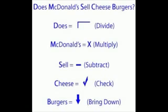Does represents division, McDonald's represents multiplication, sell represents subtraction, cheese represents check, burgers represents bring down the next number.